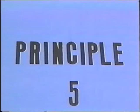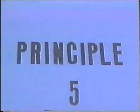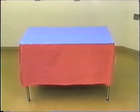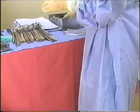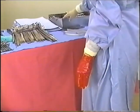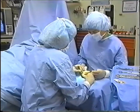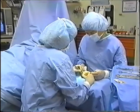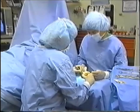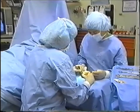Principle number five: tables are sterile only at table level. Drapes that hang over the sides are considered unsterile because they are out of sight and cannot be monitored. Scrubbed persons should not allow their hands to fall below the sterile field for the same reason. A scrubbed person should sit in a sterile area only to perform a surgical procedure and should remain seated for the entire procedure.